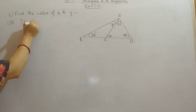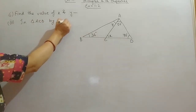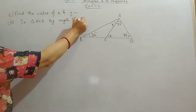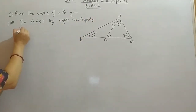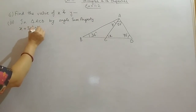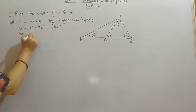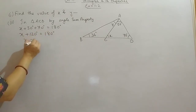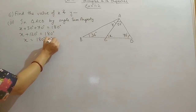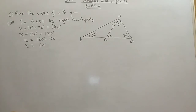In triangle ACD, by angle sum property, X plus 50 plus 70 equals 180 degrees. Adding 50 and 70 gives 120 degrees. So X equals 180 minus 120, which is 60 degrees. Now we have found X, and we can use the exterior angle property.